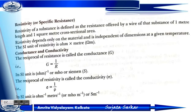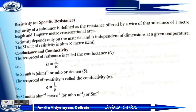Another topic is resistivity, or specific resistance. Resistivity of a substance is defined as the resistance offered by a wire of that substance of one meter length and one square meter cross-sectional area. Resistivity depends only on the material and is independent of the dimensions of the conductor at a given temperature. The SI unit of resistivity is Ohm-meter.